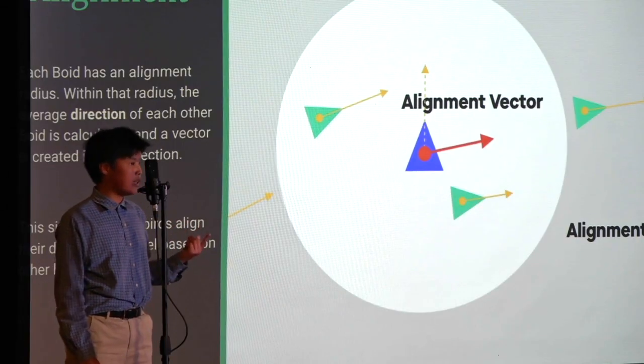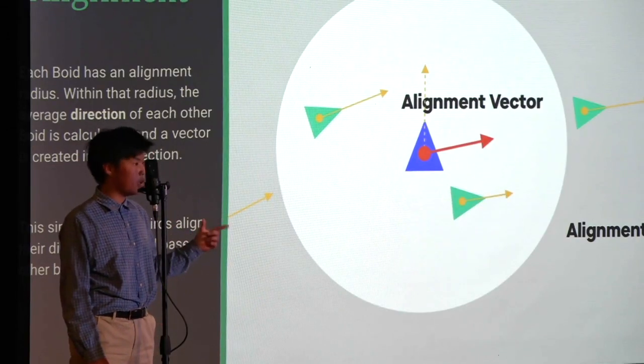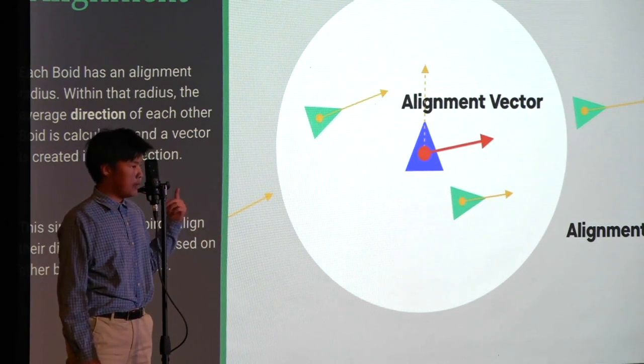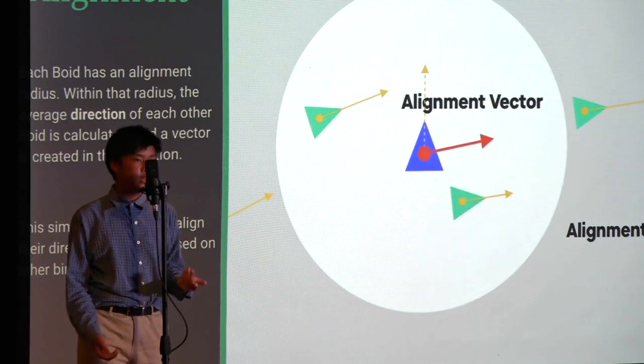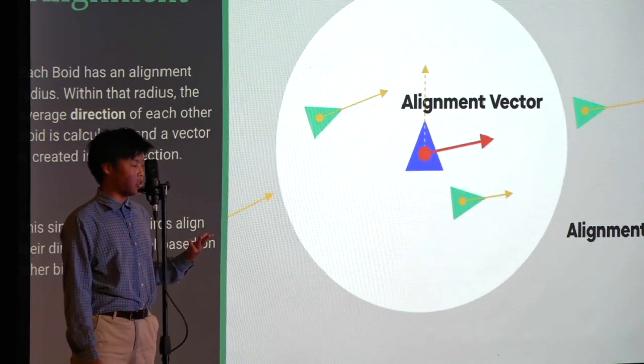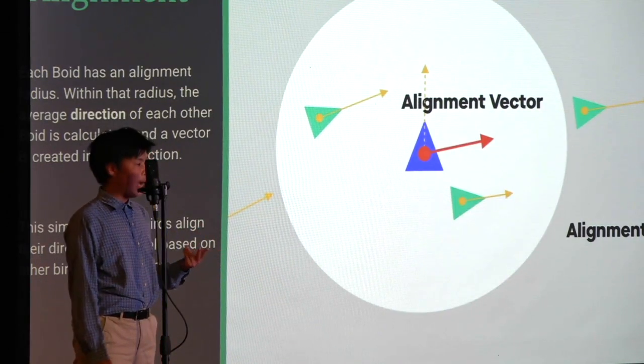The second rule is alignment. Alignment is similar to cohesion. There's a radius around every boid. Within that radius, the average direction of every boid is calculated and a vector is created in that direction. You can see in that image there are two other boids in that radius, and their average direction is calculated and a vector is created in that direction. This simulates how birds flock in one direction and they stick together.